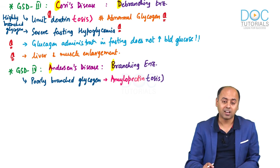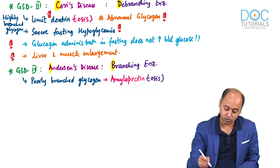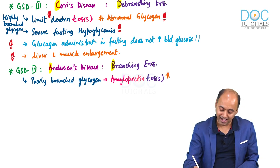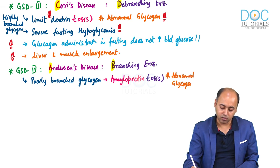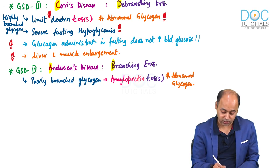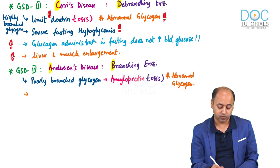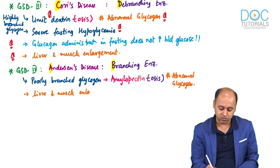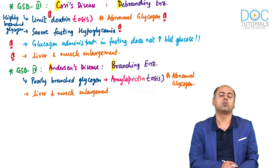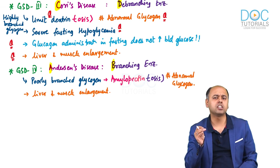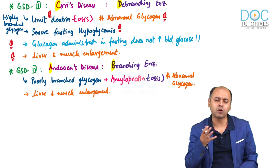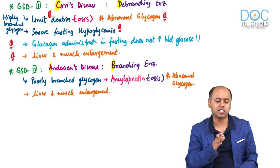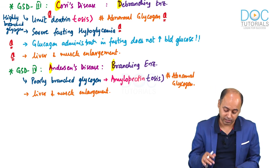This poorly branched glycogen resembles the amylopectin of starch — amylopectin is poorly branched — and therefore the condition is sometimes also known as amylopectinosis. Here also we are getting abnormal glycogen. The enzyme is deficient in both liver and muscle, so liver and muscle enlargement will both occur. In this case, muscle weakness is generally not there and exercise intolerance is generally not there. Although hypoglycemia will be present, it is not very profound because some amount of glycogen breakdown occurs gradually.